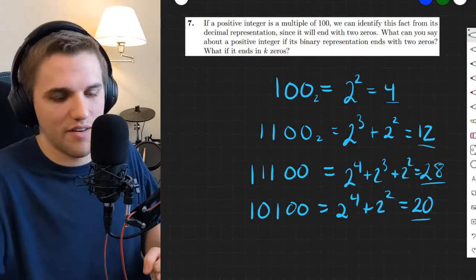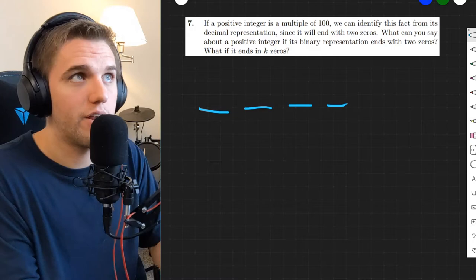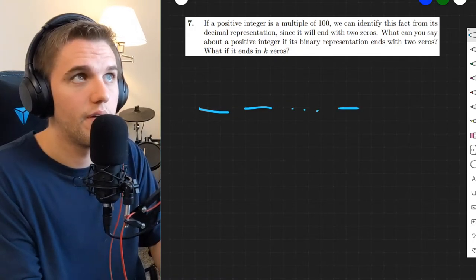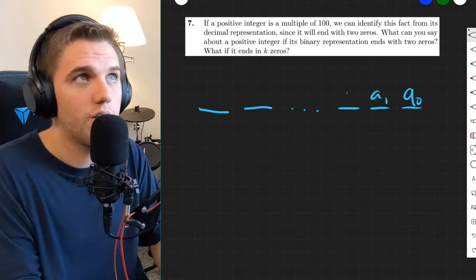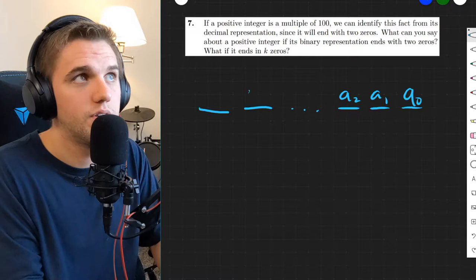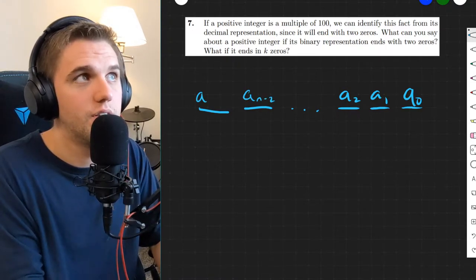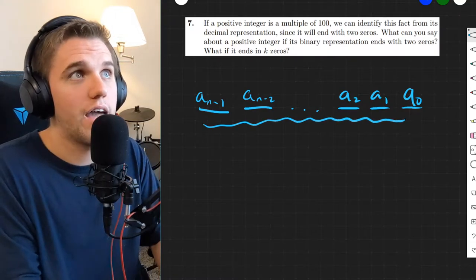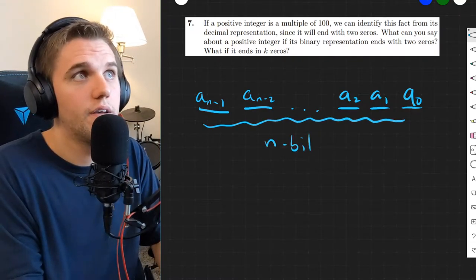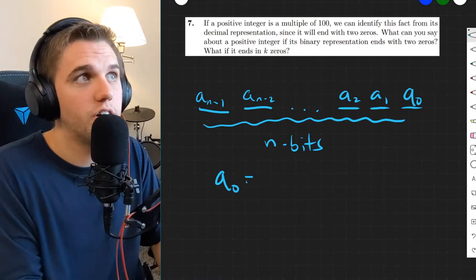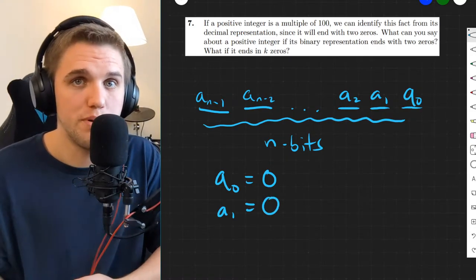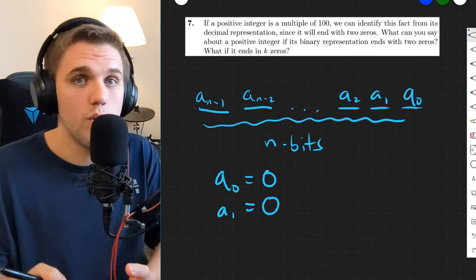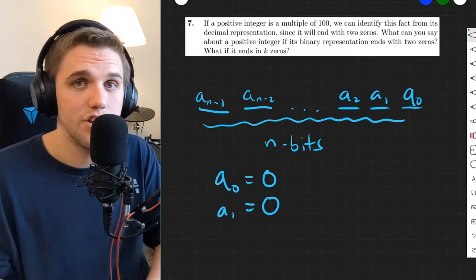So what can we do here? Well, suppose I have a binary number, where this is a₀, a₁, a₂, aₙ₋₂, aₙ₋₁. So there are total of n bits here. And we're going to suppose that a₀ is 0 and a₁ is 0. This means that my furthest two bits are 0s.